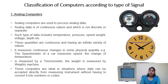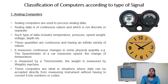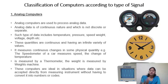Analog computers measure continuous changes in some physical quantity — it can be speed, time, temperature, pressure, or voltage — always giving us a change in values.